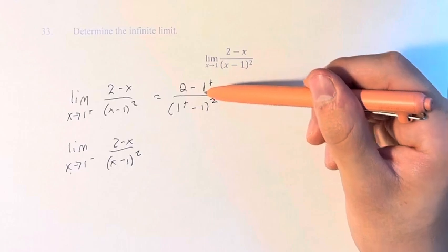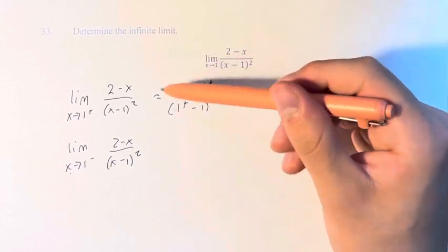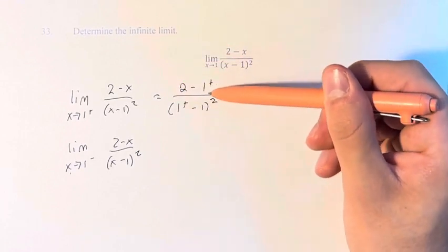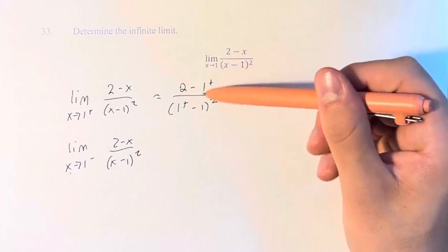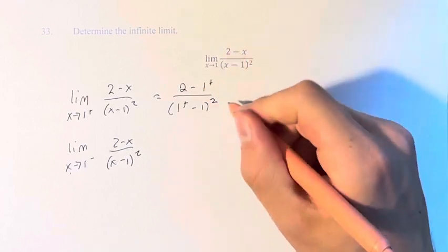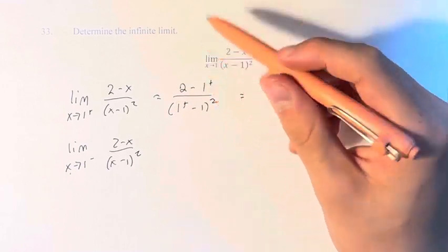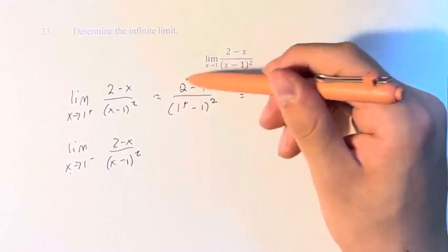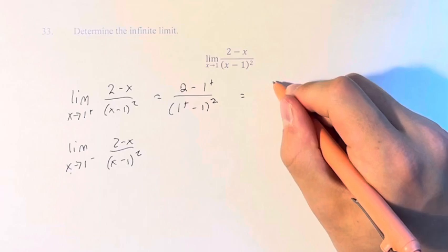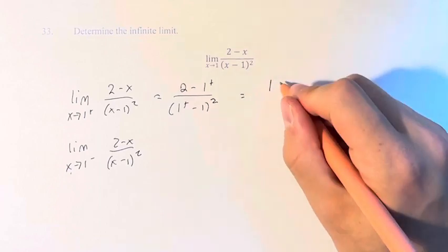So 2 minus 1 from the right. This means you're taking 2 and subtracting values that are slightly greater than 1. As that value gets closer to 1, 2 minus 1 is what we're approaching, which is 1, and we're approaching it from the left.